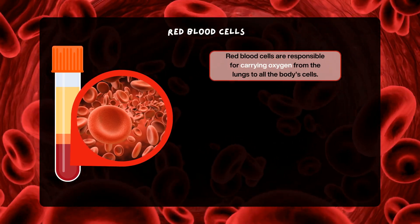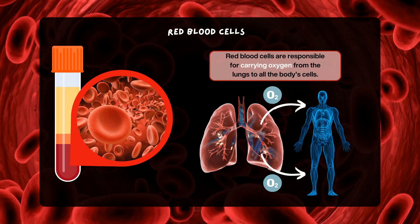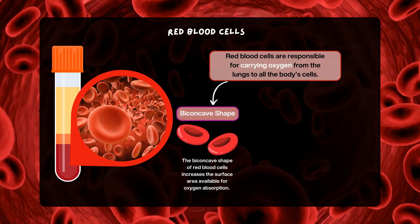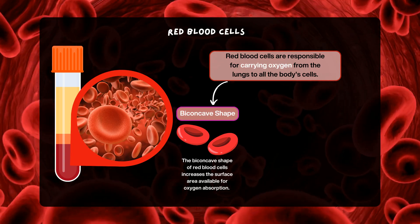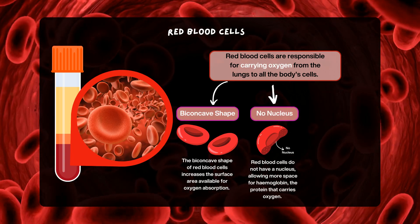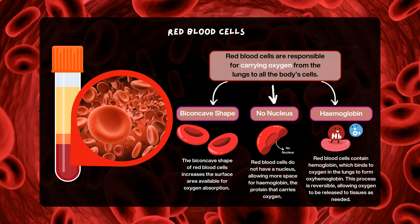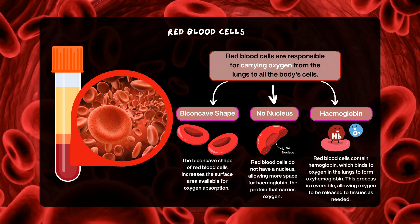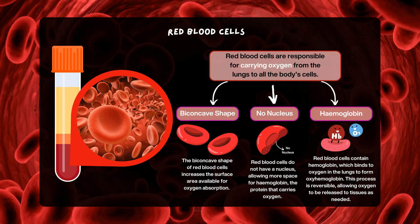Red blood cells are responsible for carrying oxygen from the lungs to all the body's cells. They have several unique adaptations that enhance their effectiveness. Firstly, the biconcave shape of red blood cells increases the surface area available for oxygen absorption. Secondly, red blood cells do not have a nucleus, allowing more space for haemoglobin, the protein that carries oxygen. Thirdly, each red blood cell is filled with haemoglobin, which binds to oxygen in the lungs, forming oxyhaemoglobin. This process is reversible so that oxygen can be released to tissues where it is needed.